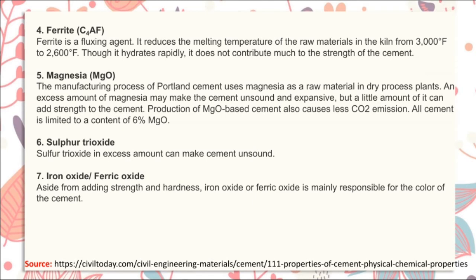Ferrite (C4AF) is a fluxing agent that reduces the melting temperature of raw material in the kiln from 3000°F to 2600°F. Though it hydrates rapidly, it does not contribute much to the strength of cement. Magnesia (MgO): the Portland cement manufacturing process uses magnesia as a raw material; an excess amount may make cement unsound and expensive, but a small amount can add strength. Production of MgO-based cement also causes less CO₂ emission. Cement is limited to a content of 6% MgO.